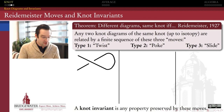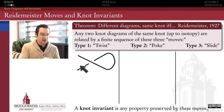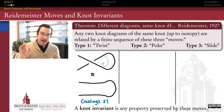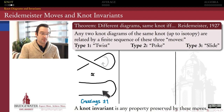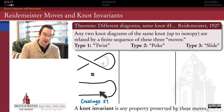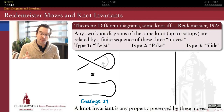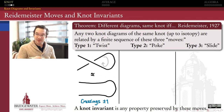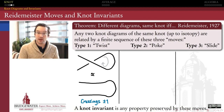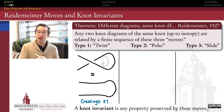The type 1 Reidemeister move is called the twist. If I have a little loop in my knot diagram that doesn't seem important to the overall structure of the knot, I can untwist that loop and forget about it. This move can reduce the number of crossings in a diagram by one — or increase it by one in the reverse direction. Ideally, applying type 1 moves enough times can get us down to the simplest possible knot diagram.